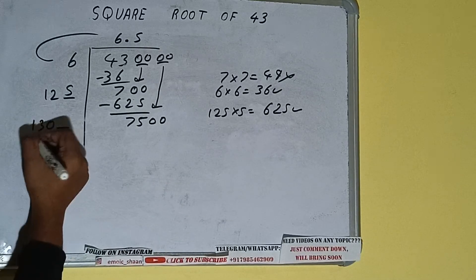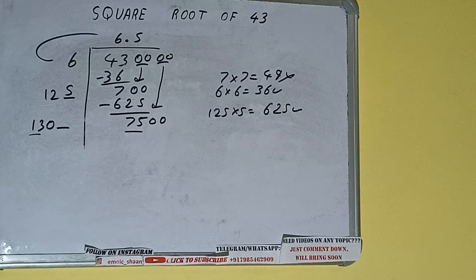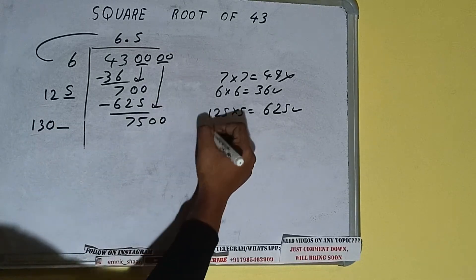Now compare this 13 and 75. So 13 times 5 is 65, so we can try 5.